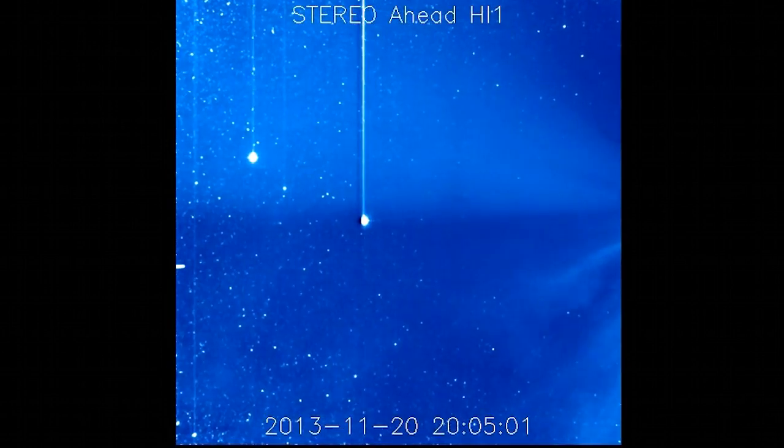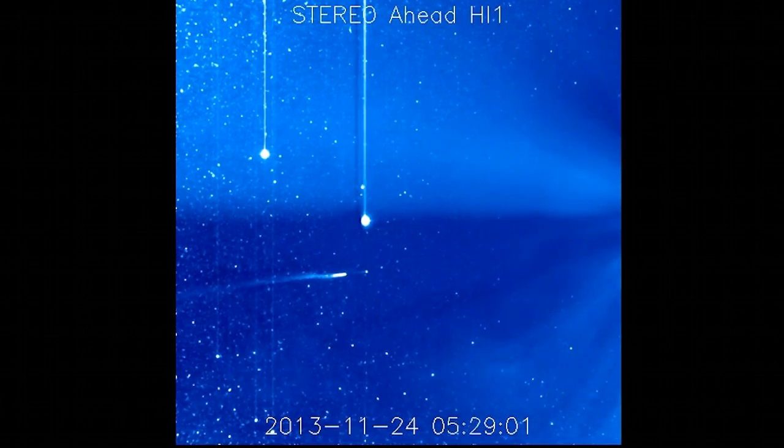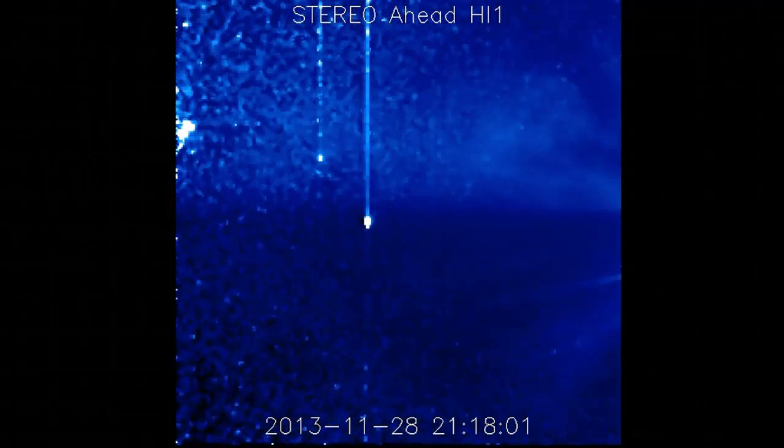In some of these graphics, Ison looks huge. Comet of the century? Give me some sugar, baby. As we're looking over the stereo head HI1 footage of Ison's passage past Mercury and Earth, I've got to ask, WTF, is that behind Comet Ison?